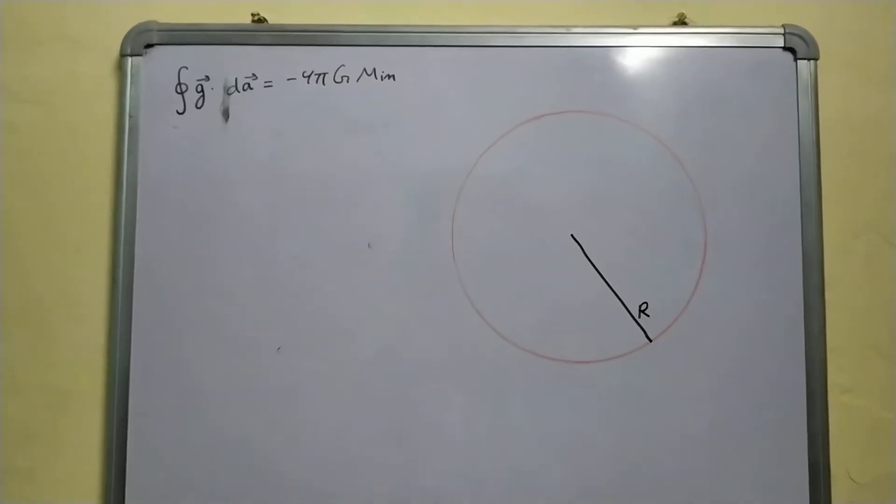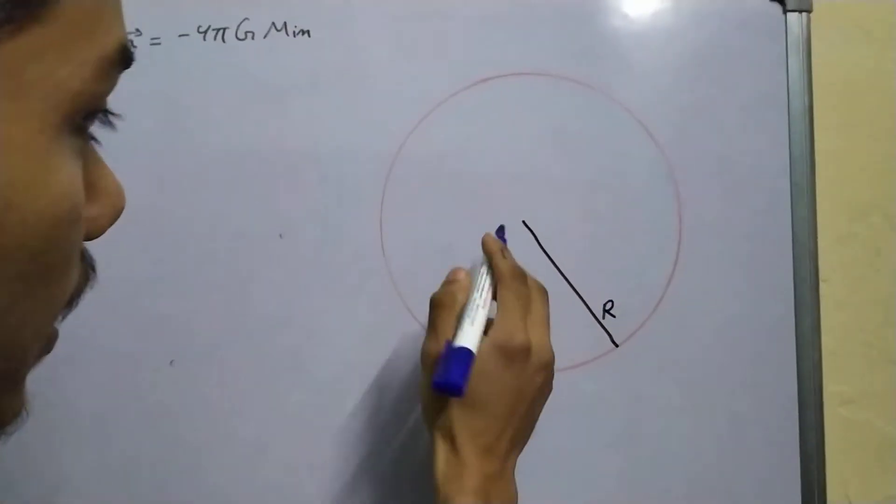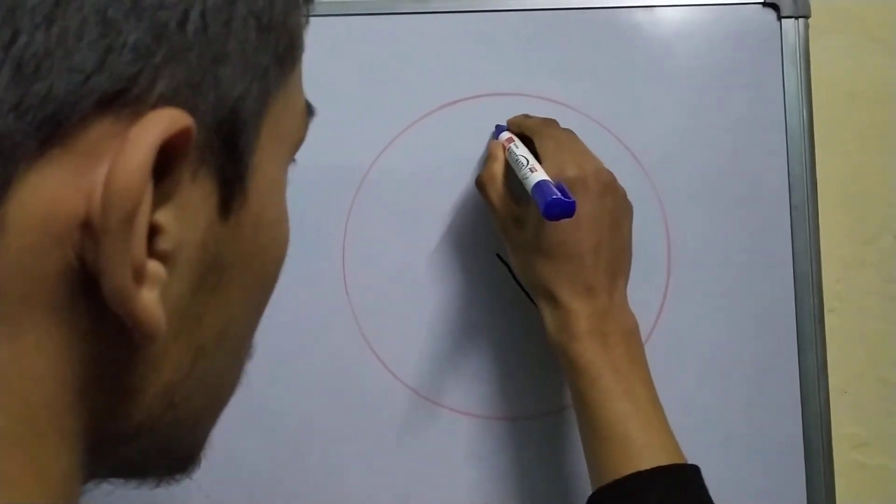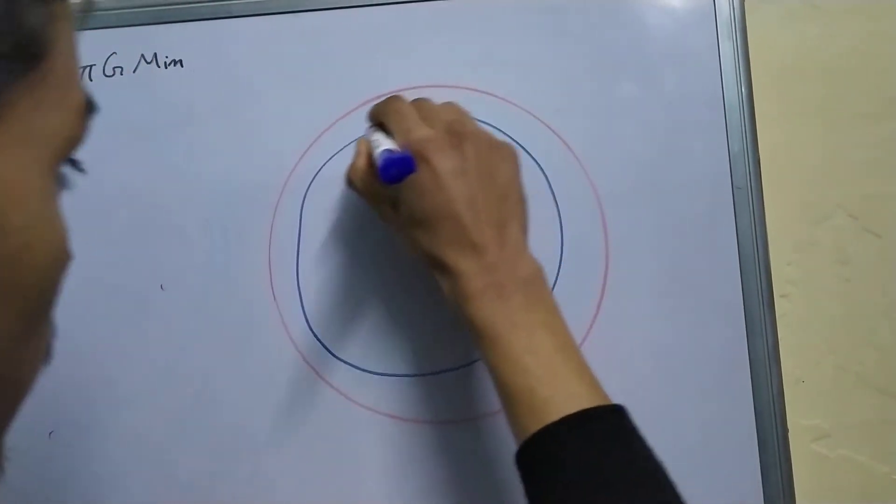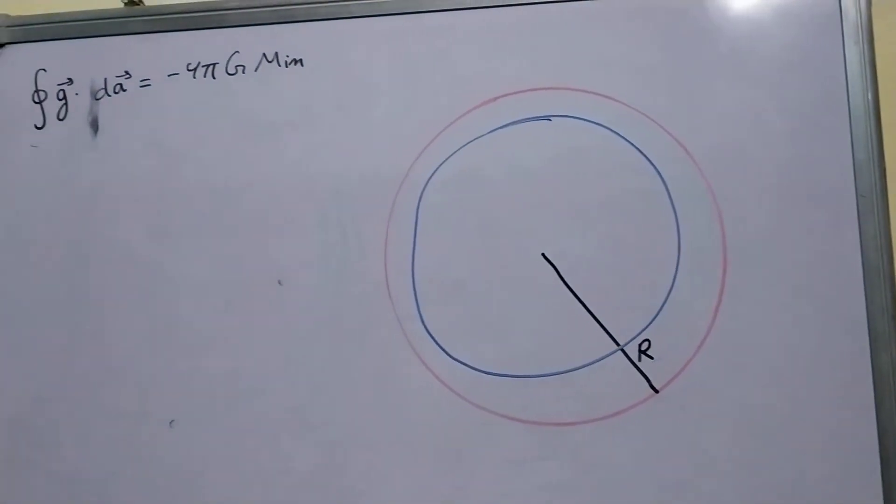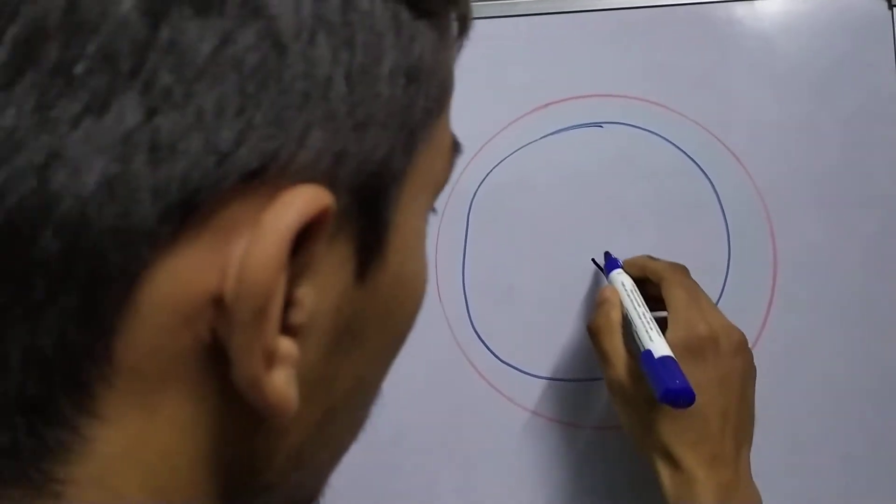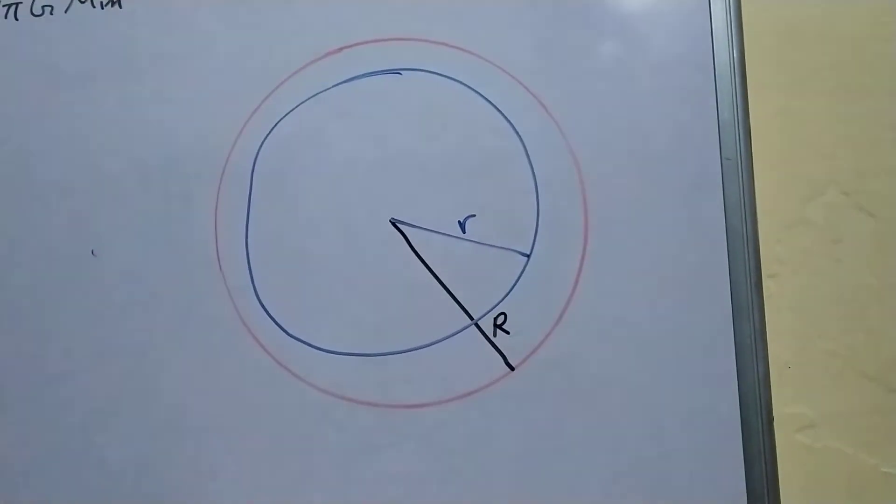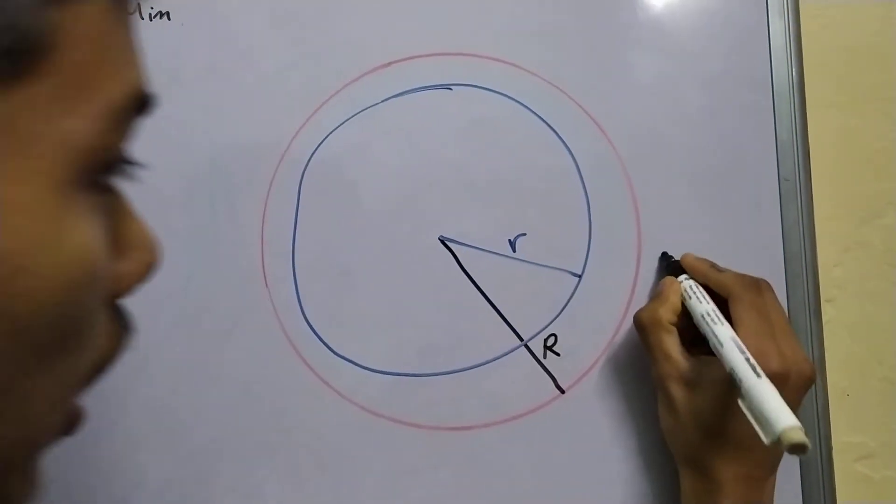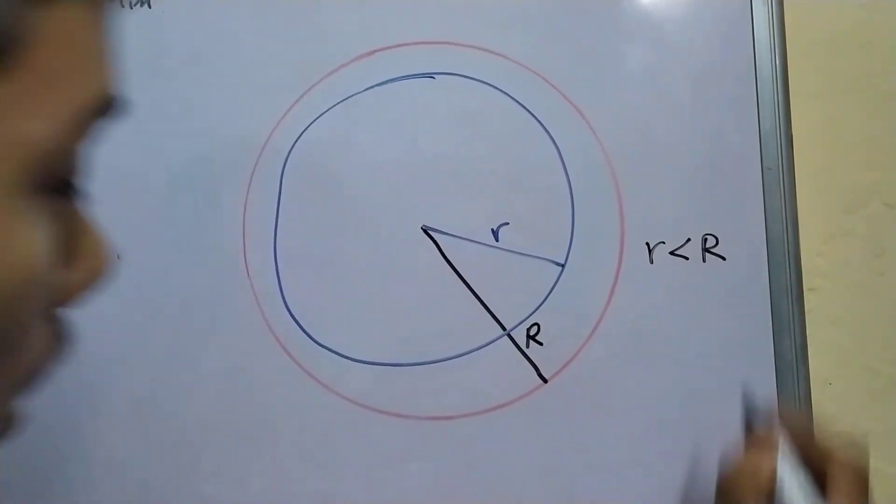We will construct a smaller Gaussian surface with the same center. It will look something like this. We assume this is circular in nature. This has a radius, small r. And obviously, small r is lesser than capital R.